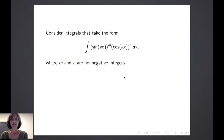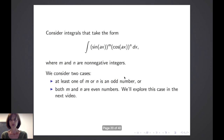If we consider integrals that take the form of the m-th power of sine of ax times the n-th power of cosine of ax dx, where m and n are non-negative integers, we usually consider two different forms. The first is when at least one of m or n is an odd number. The second is when both m and n are even numbers, which we'll explore in our second video on trigonometric integrals. So here we're going to consider this first case: when at least one of m or n is an odd number.